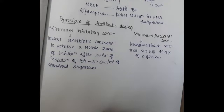MIC will inhibit the inoculation after 24 hours — the inoculation containing 10⁴ to 10⁵ colony forming units per ml of standard organism will be inhibited. In minimum bactericidal concentration, we are killing the organisms, whereas in minimum inhibitory concentration, we are just inhibiting the growth of organisms, not killing them. Bacteriostatic drugs mainly show minimum inhibitory concentration, whereas for bactericidal drugs, we take into account minimum bactericidal concentration.